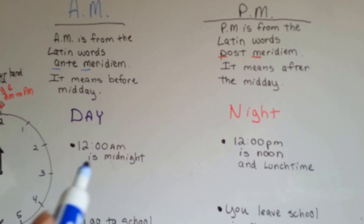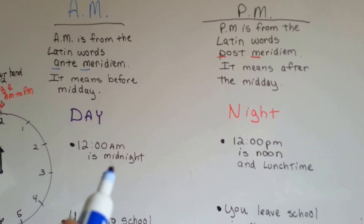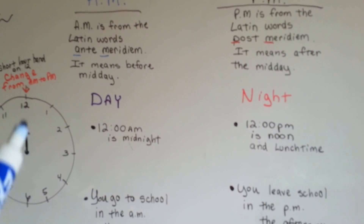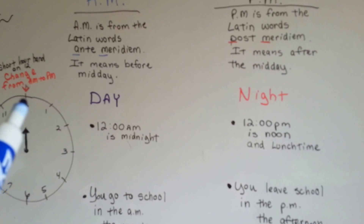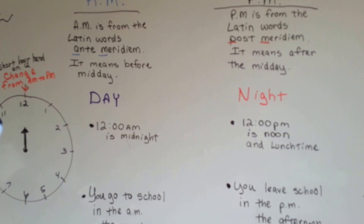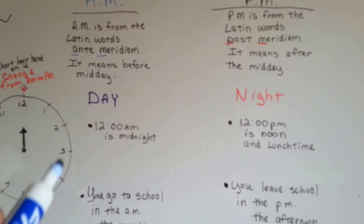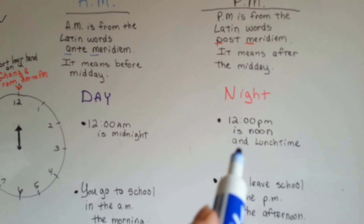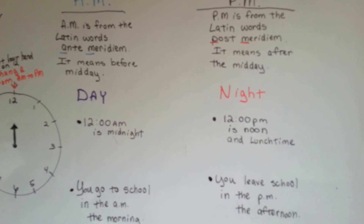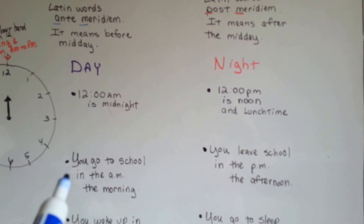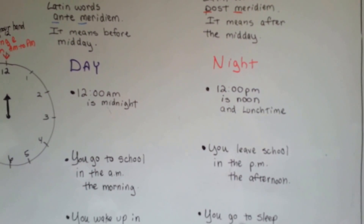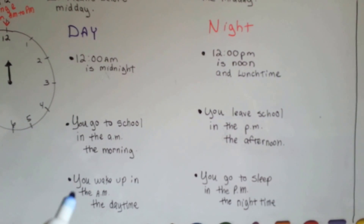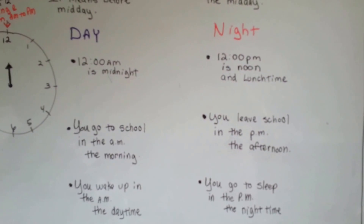12 AM is midnight. I know that's really confusing because it's night, but it's right when the hour hand is changing from the PM evening — when you ate dinner and went to bed — to the AM when in a few hours you're going to wake up. 12 PM is noon. It's lunchtime, it's almost afternoon. You go to school in the AM in the morning. You leave school in the PM in the afternoon.